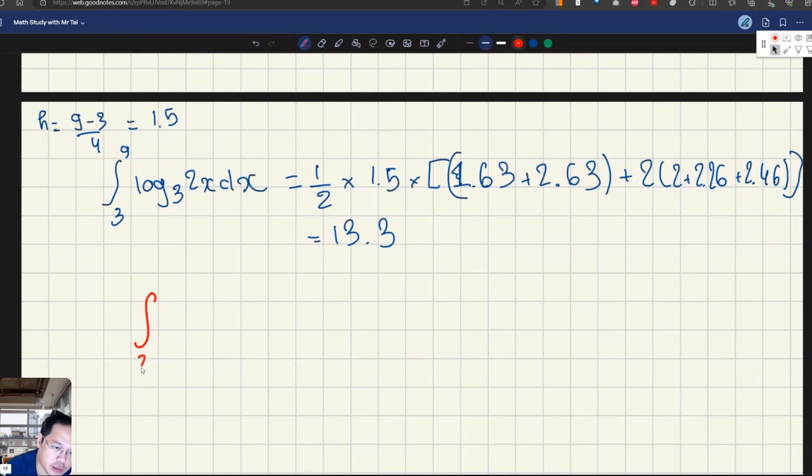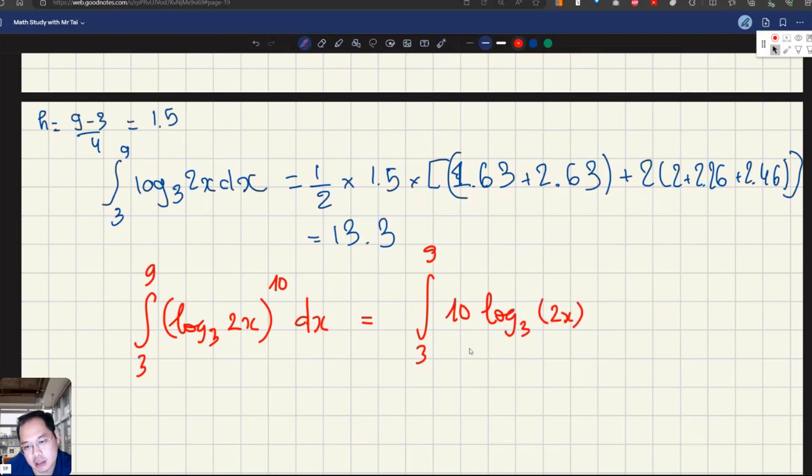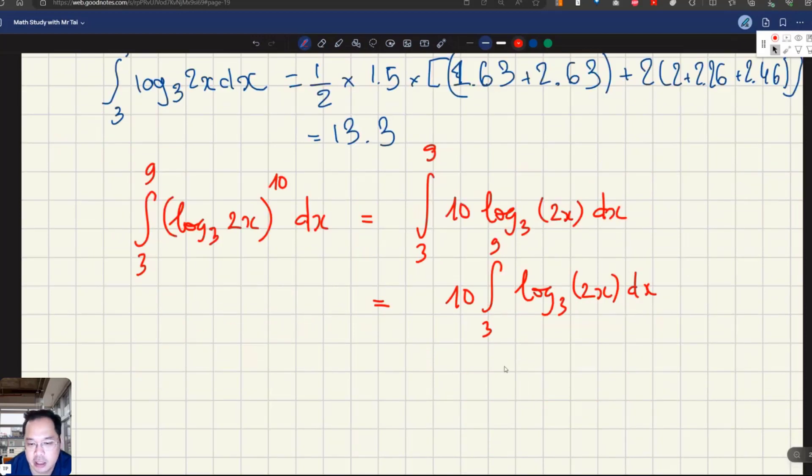So the next question: the integration from 3 to 9 of logarithm base 3 of 2x, all to the power of 10. Then simply, we use the property of the logarithm function, bring the 10 down. Integration 3 to 9 of 10 times logarithm base 3 of 2x dx. And the number 10 inside this integration, we can completely bring it out in front. It doesn't affect our integration: 10 times integration from 3 to 9 log base 3 of 2x dx. And this part after the 10, we already calculated it as 13.3. So multiplying by 10 more, we will have the result of 133.